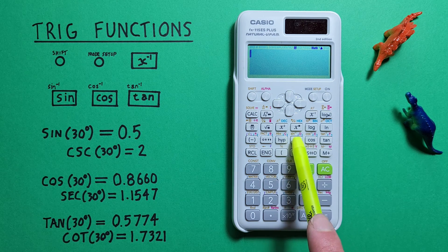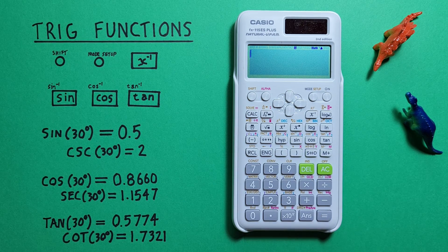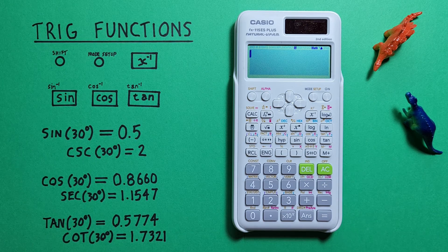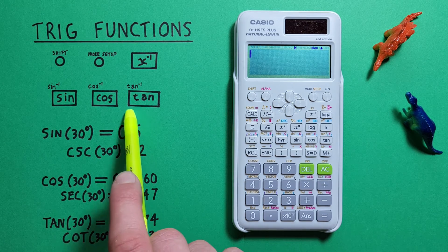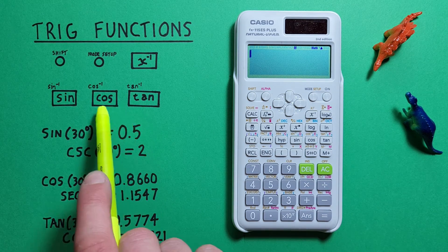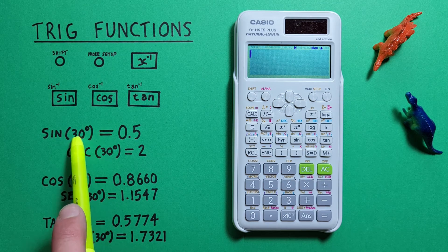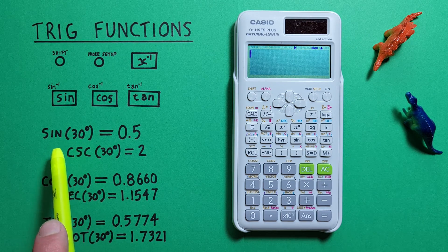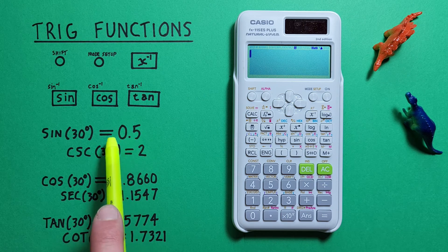This lets us go from the result, or the decimal, backwards and determine how many degrees were used in the initial function. So if we had 0.5 and wanted to find the arc sine, we would press shift, sine.